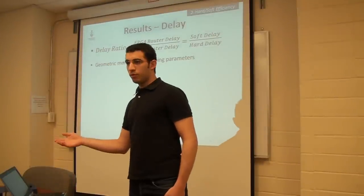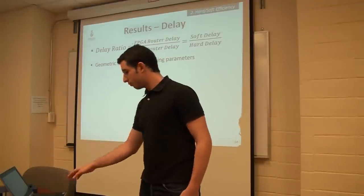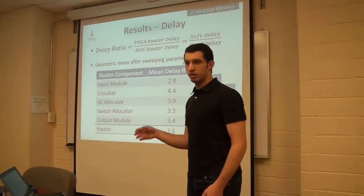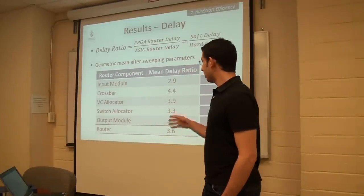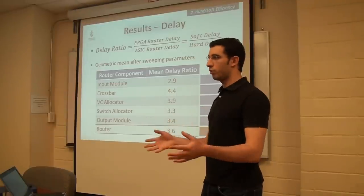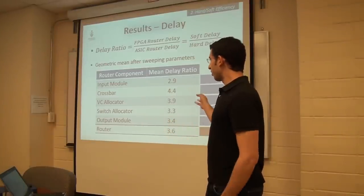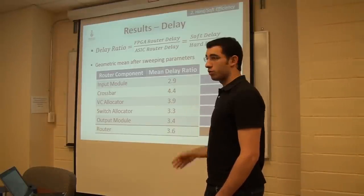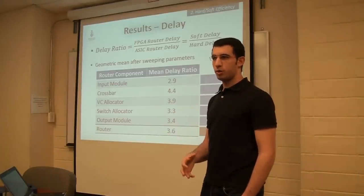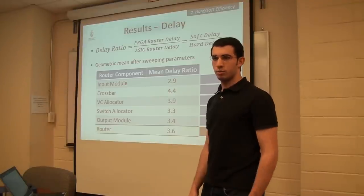For delay, the geometric mean results support the area findings. The best component was again the input module centered around fast block RAMs, the worst was again the crossbar, and on average the router was 3.6 times slower on the FPGA than on a hard ASIC implementation.